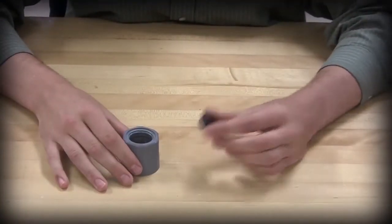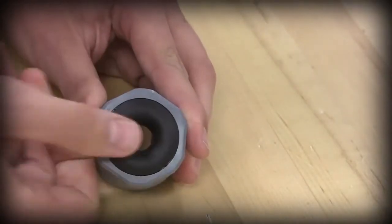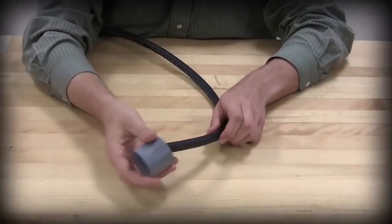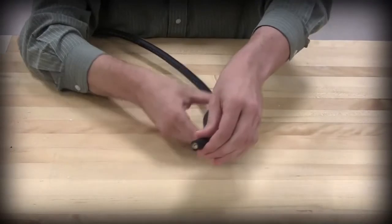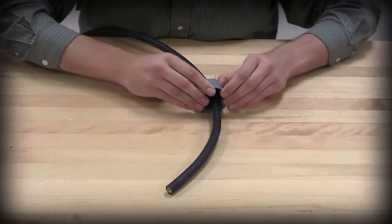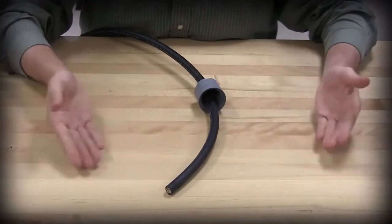Next, fully seat the cone seal onto the nut by inserting it into the back end of the nut. Feed approximately 12 inches of the cord through the attached cone seal and out the threaded end of the nut. Ensure that the cone seal is fully seated in the nut.